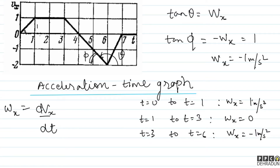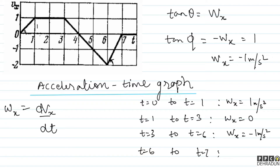Aur agar finally baat karun t equal to 6 se t equal to 7 ki, toh is baar slope positive aa raha hai. Perpendicular hai 2 aur base hai 1, matlab tan of this angle = 2 upon 1. Toh wx is baar kya aa jaayega — 2 meter per second square.